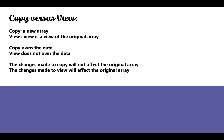So it is copy versus view. Copy creates a new array — it's a new array — and view is just a view of the original array. Don't worry, you'll understand it when we get into the code. Copy owns the data and view does not own the data. Those who have read database management systems might be acquainted with the term view.